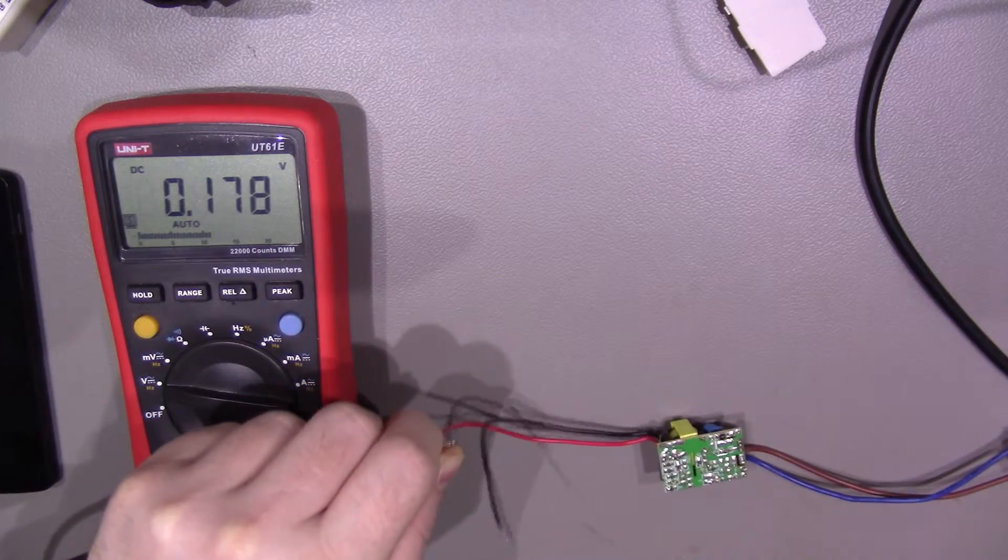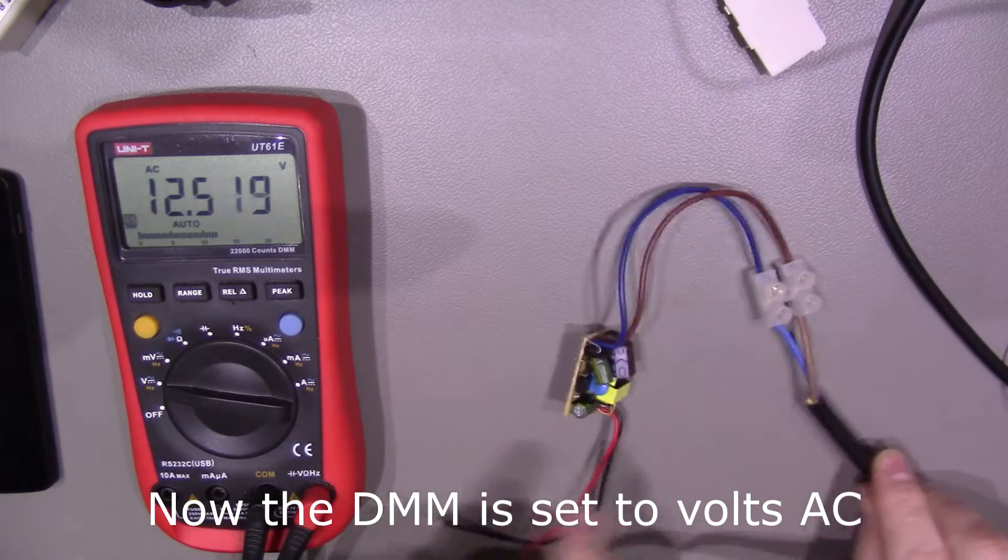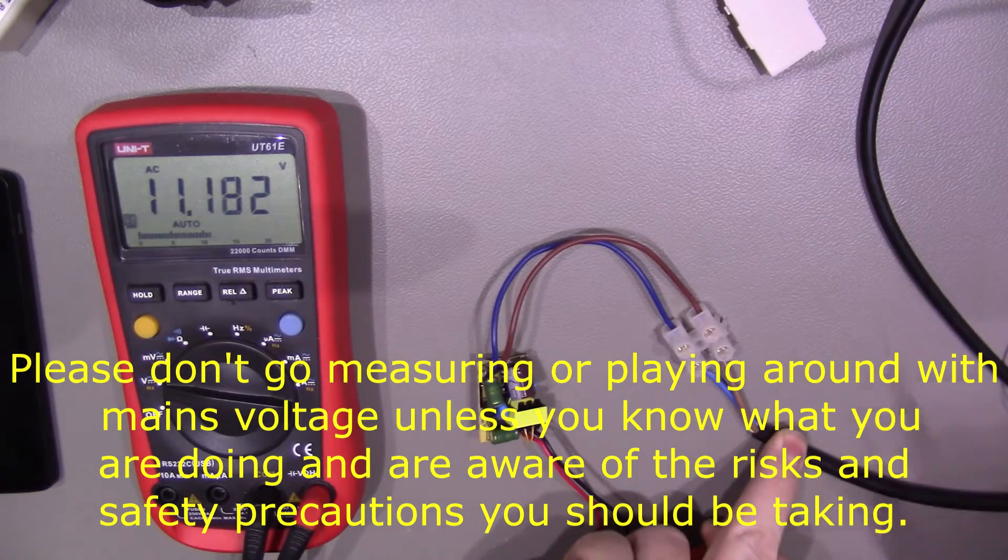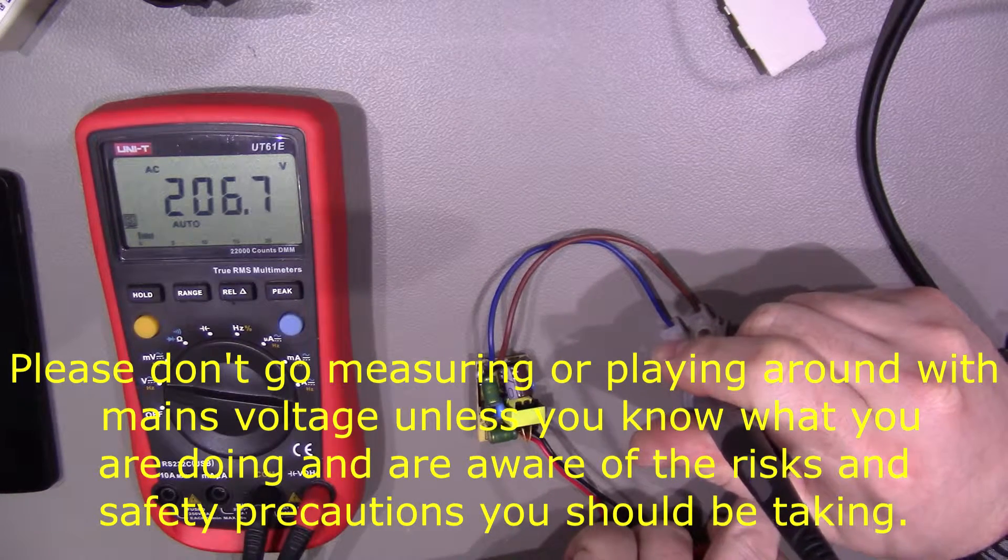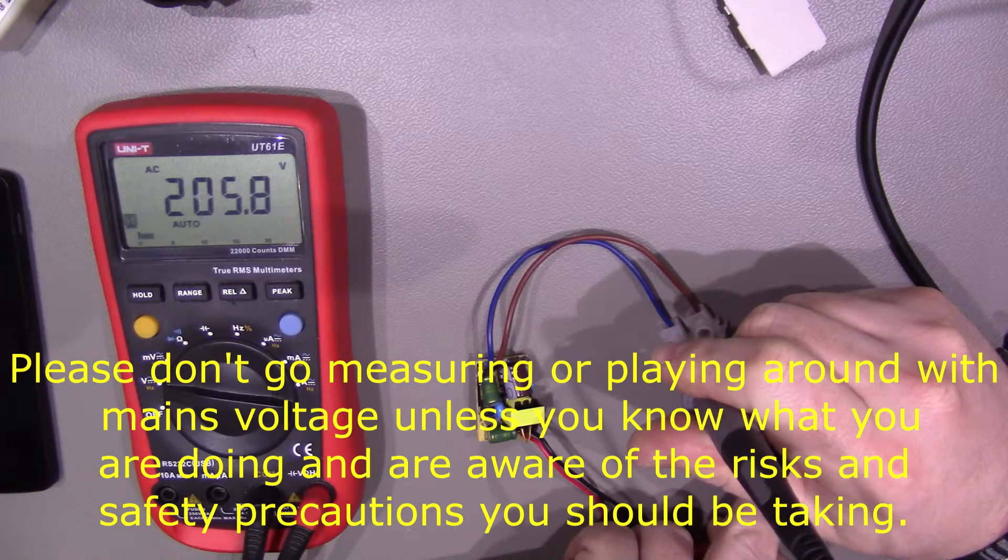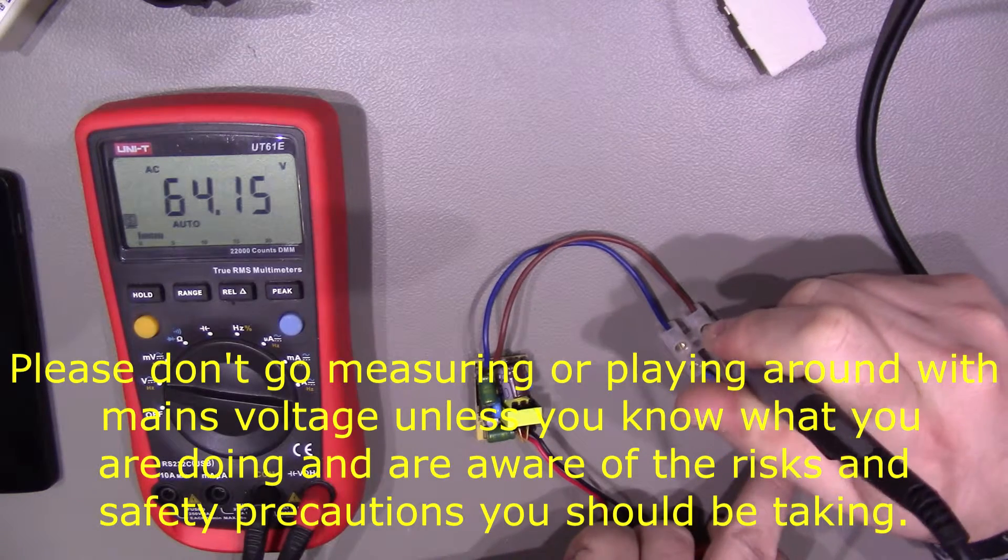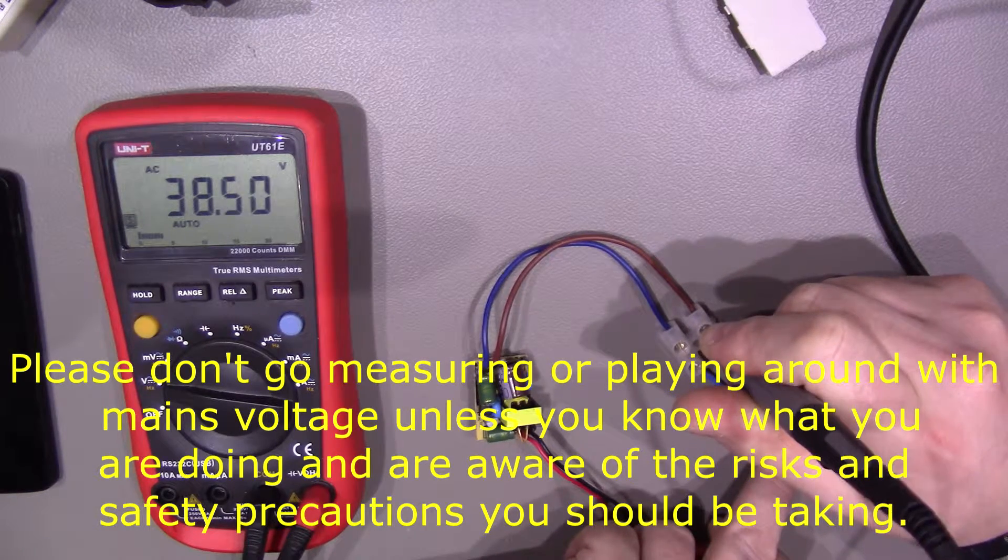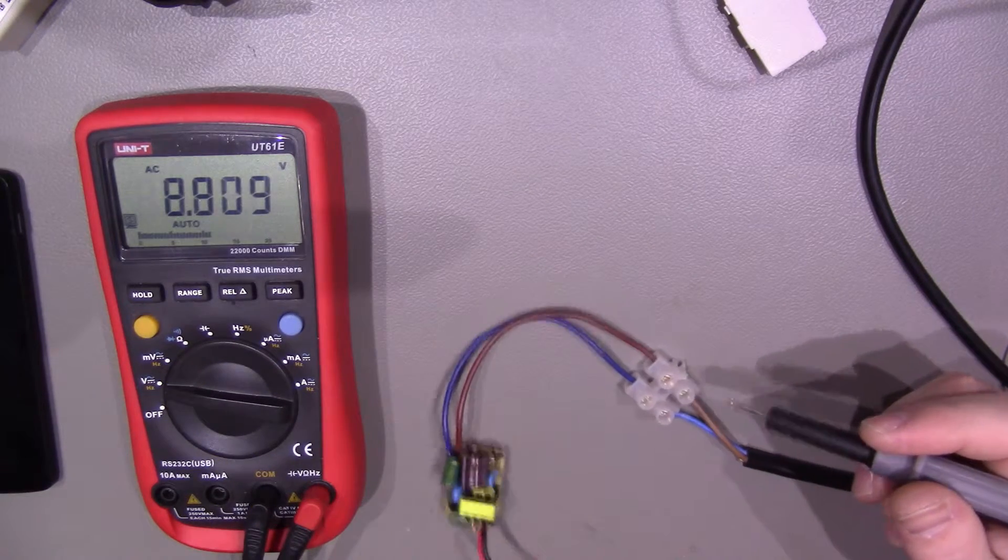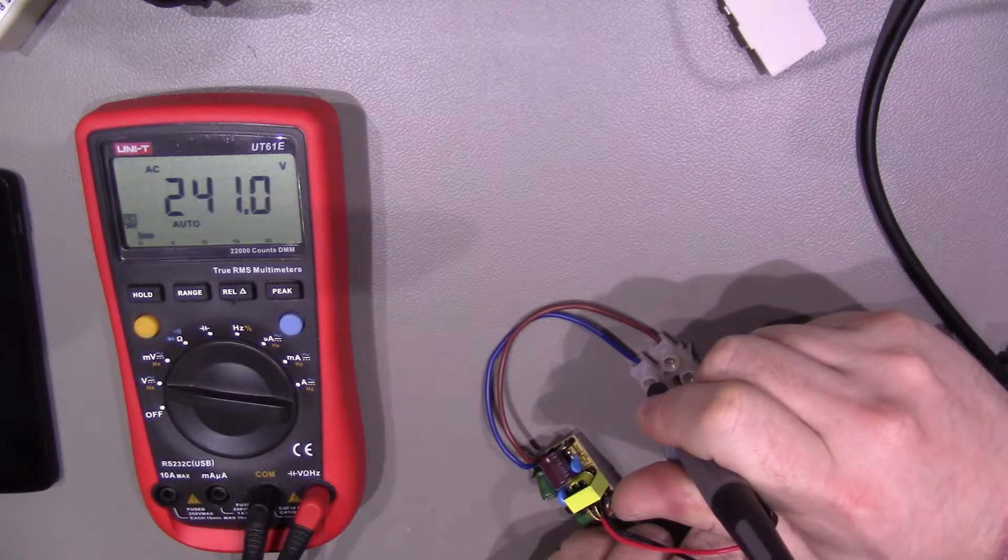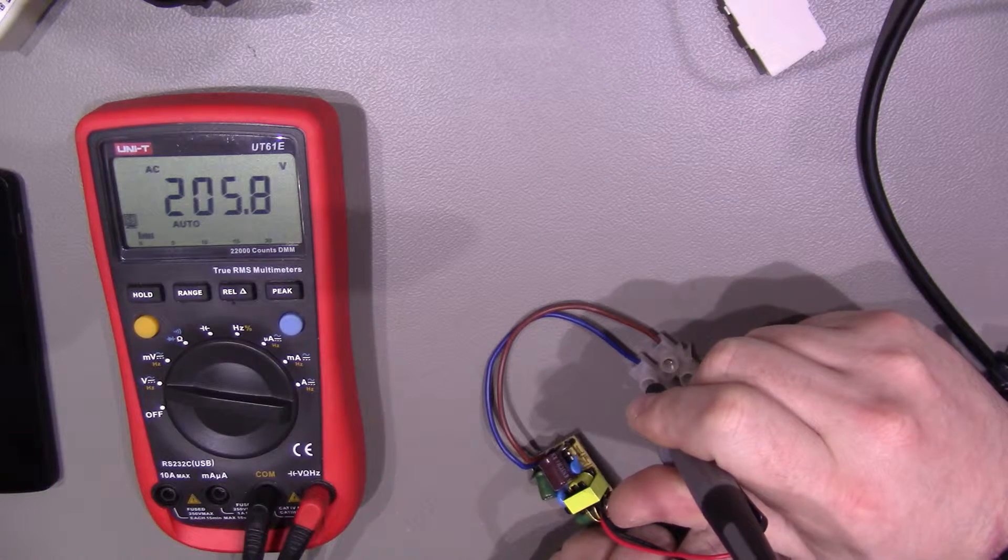If we leave our positive connected here, and then we will go over to here and probe our neutral connection coming in there. Now we have 205.8 volts AC. Check it between live, 38 there. Let's do the same again on the neutral, neutral to neutral, there we are, 205.8.